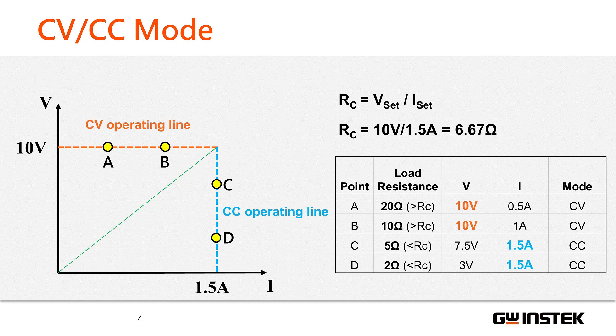For load resistances of 20 ohms and 10 ohms, they exceed the critical resistance value. As a result, the power supply operates in CV mode to maintain a constant voltage. The V-I point remains on the orange line.